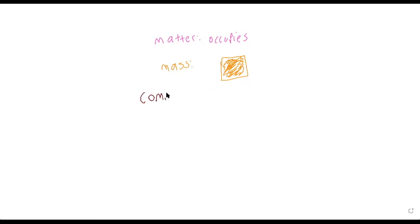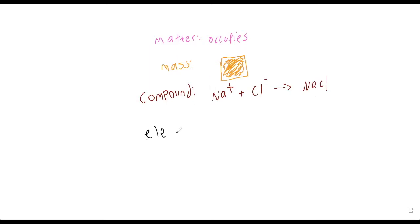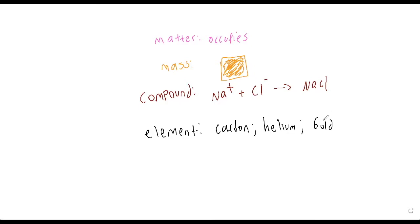Next is a compound — it's anything that contains two or more elements. For example, Na (sodium) plus chlorine is going to equal table salt, NaCl — that is a compound. Next is an element, and elements are comprised of one type of atom. For example: carbon, helium, or gold — an element is comprised of one type of atom.